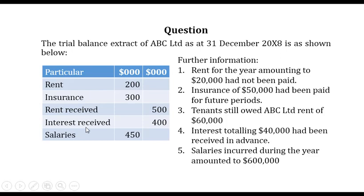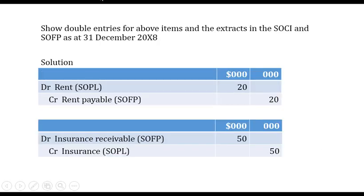Note that except for sales, purchases, and discounts allowed and received, items of income and expenses are usually included in the trial balance on a cash basis. So rent means we paid rent of two hundred thousand dollars, insurance means we paid insurance of three hundred thousand dollars, and so on. We're given further information on these items. We are required to show the double entries and prepare extracts of the statement of comprehensive income and statement of financial position at 31st December 20X8.